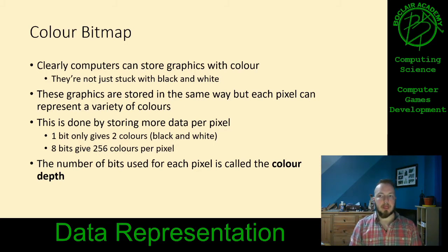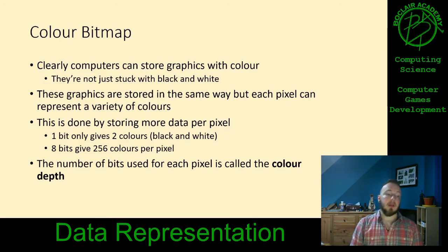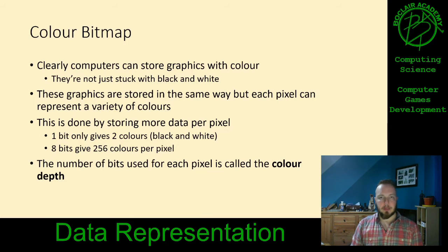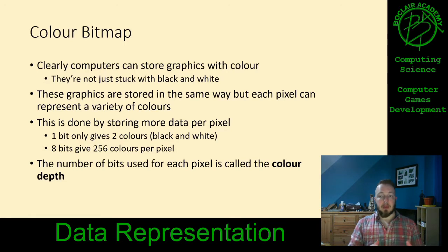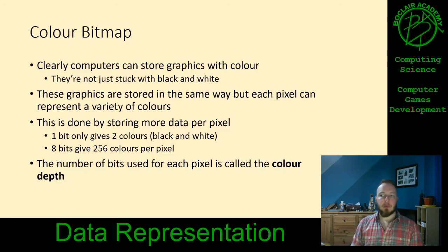The slightly more complicated element comes in when we start talking about colour. Black and white can be done with one bit per pixel because it only gives you two options: a zero or a one. The colour depth of an image is how many bits of data you use per pixel. An 8-bit colour depth gives you 256 colours, because an 8-bit number can be 0 to 255. That sounds like a reasonable amount, but your eye can actually distinguish between about 12 million colours, so 256 is nothing.